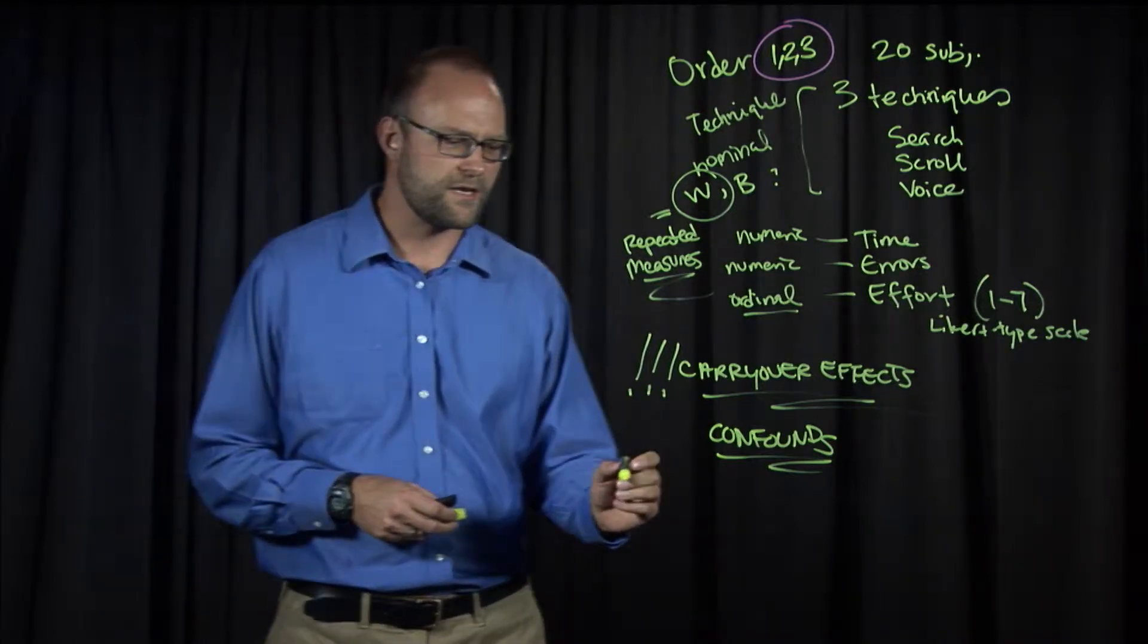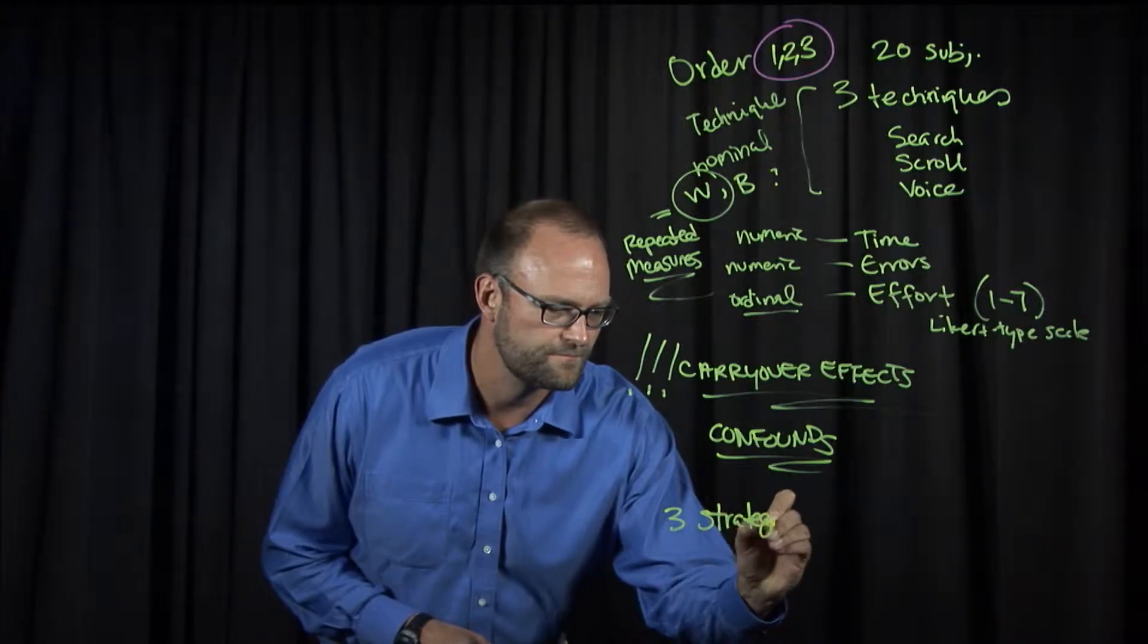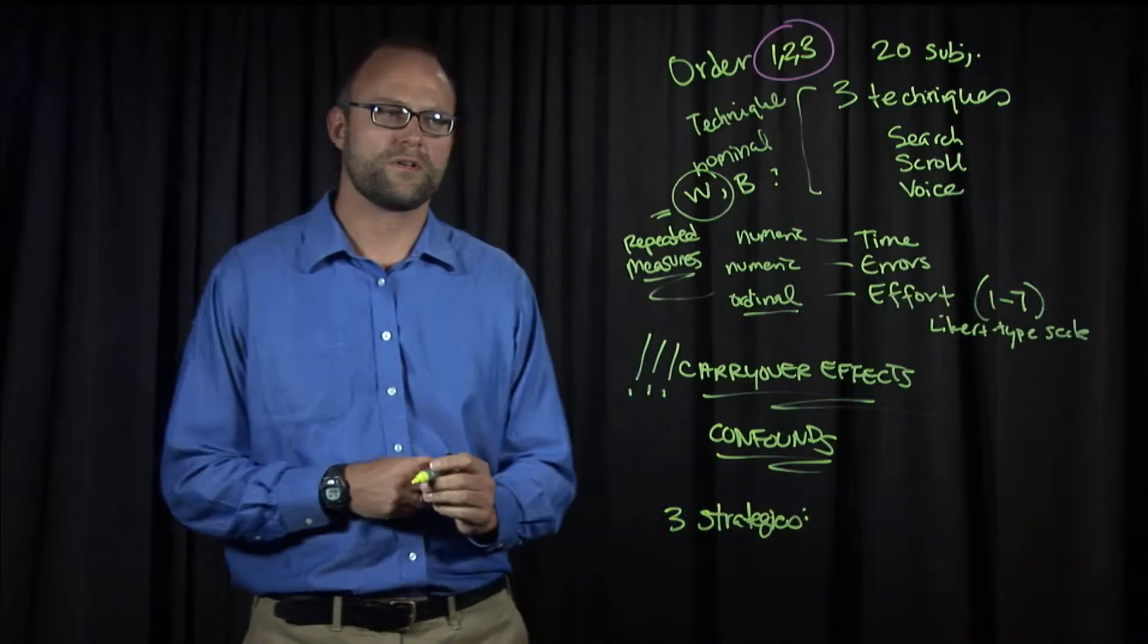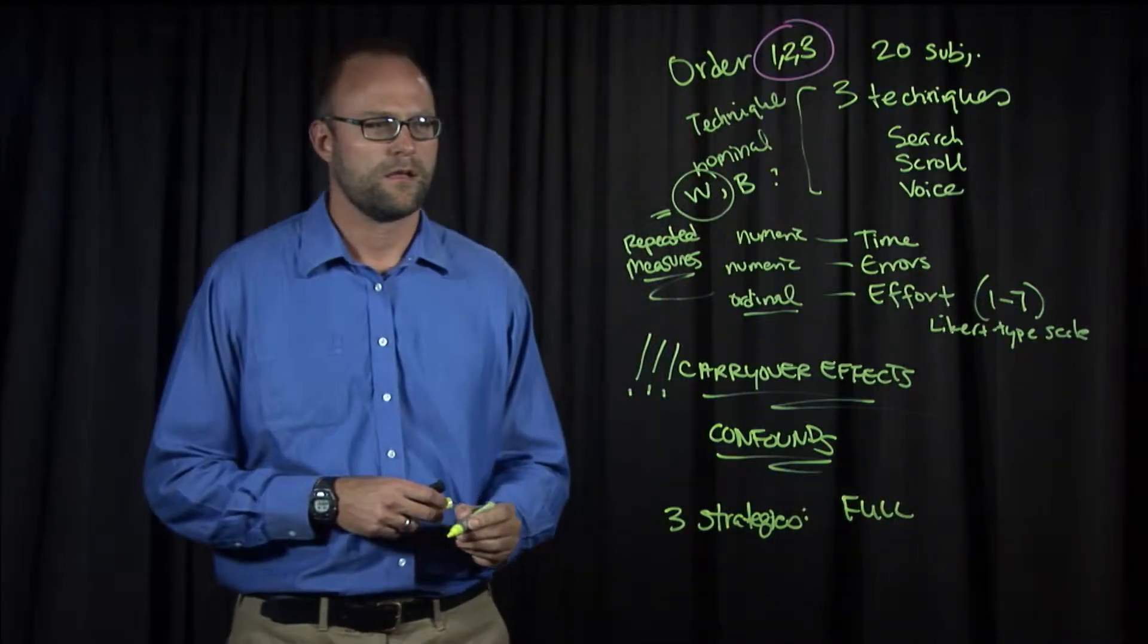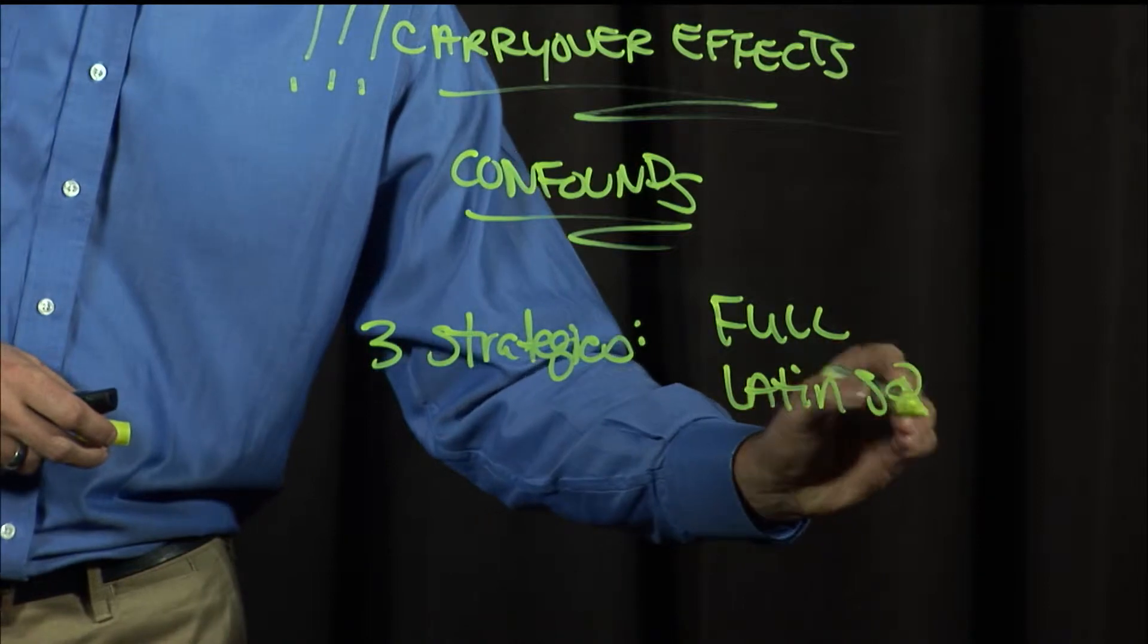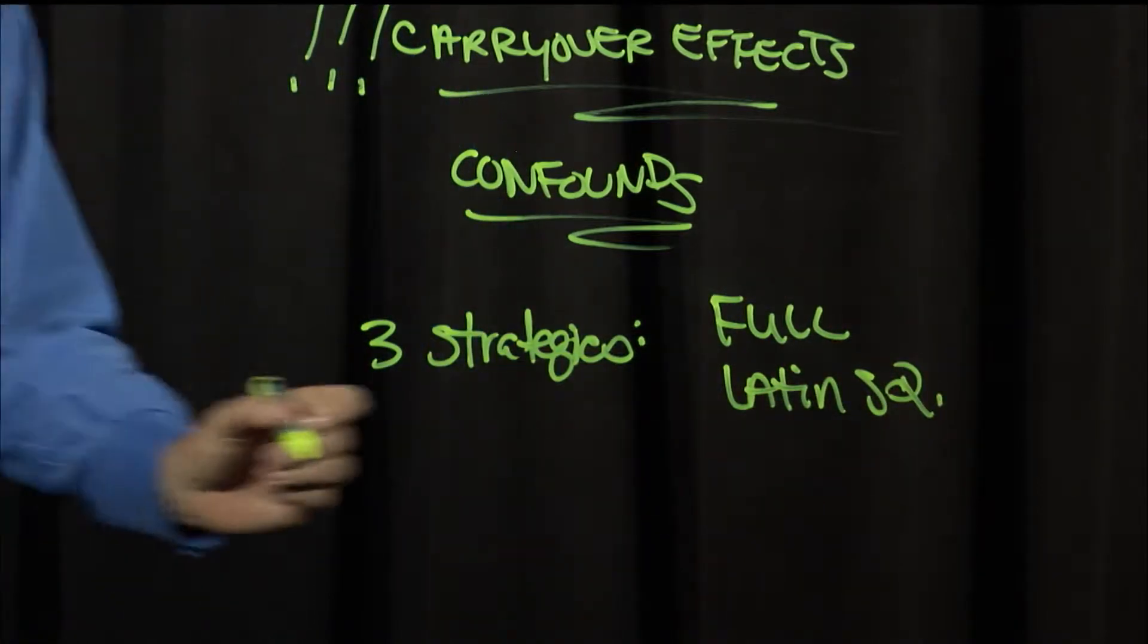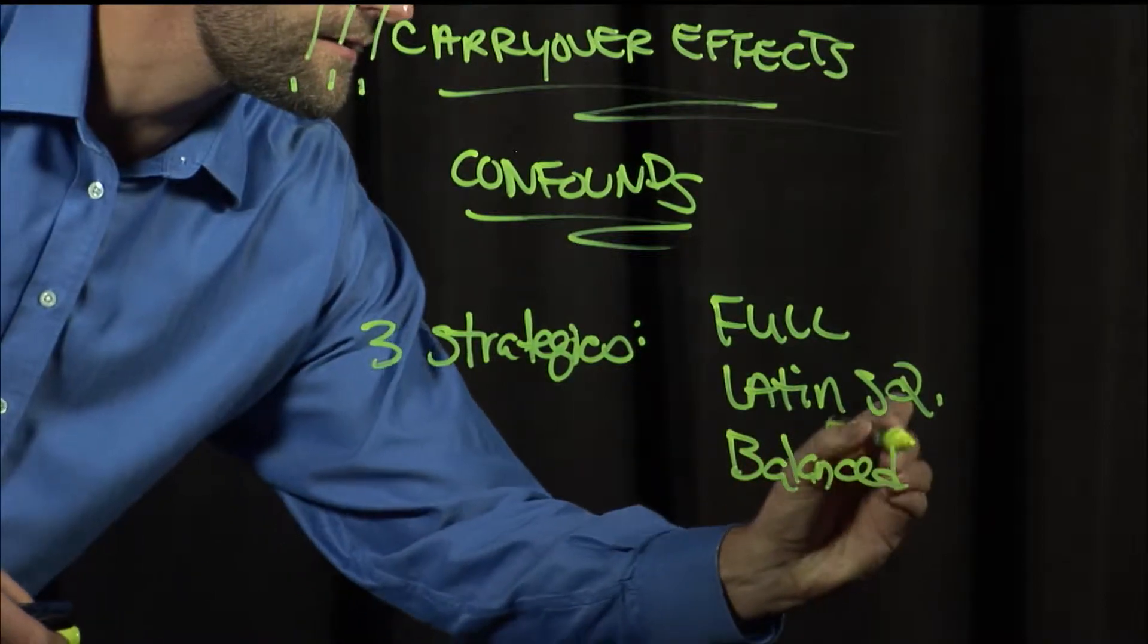There are three strategies that we'll consider. I'll write them down here. We're going to look at full counterbalancing, Latin squares, and something called the balanced Latin square.